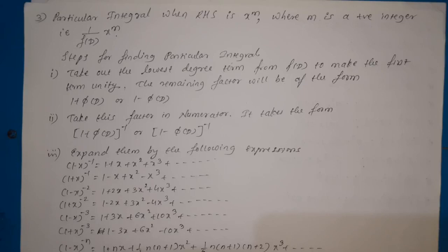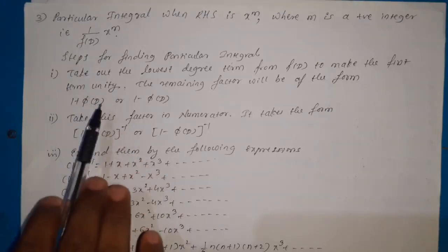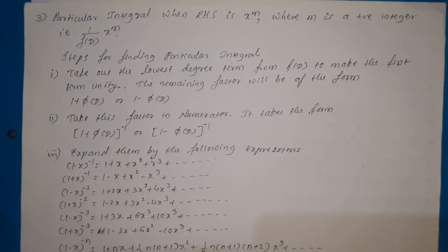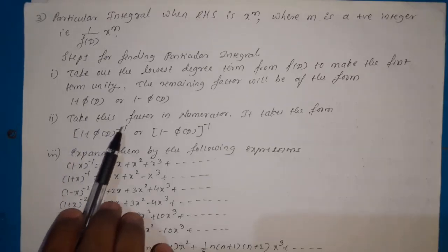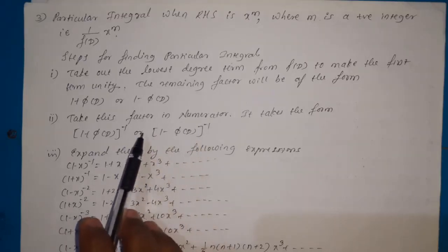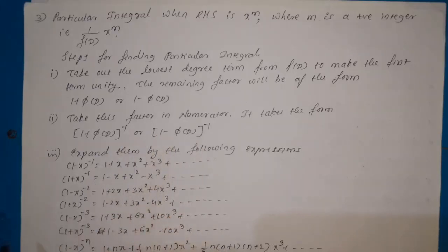We take that constant outside; for example, take 2 outside so the remaining function of D becomes 1 and the rest stays as is. Since f(D) is in the denominator, these terms — either 1 + φ(D) or 1 − φ(D) — are also in the denominator. In the next step we take them to the numerator, making them (1 + φ(D))^(−1) or (1 − φ(D))^(−1).